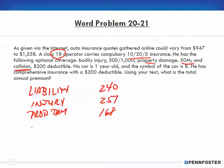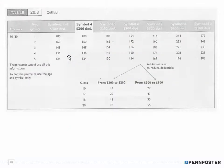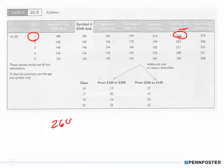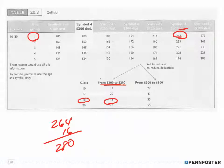Next is collision, and there's a $200 deductible. Coming down to the collision table, the age of the car was one year old and its symbol was eight. So one year old, symbol eight gives us $264. But because of the deductible going from $300 to $200, we have to add an additional $16 for that. So that's $280 for collision.